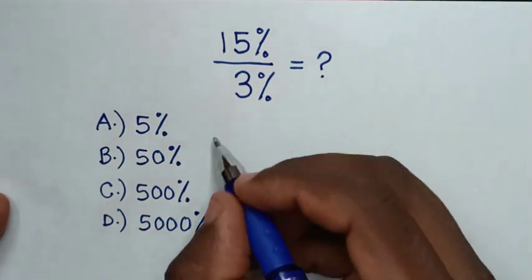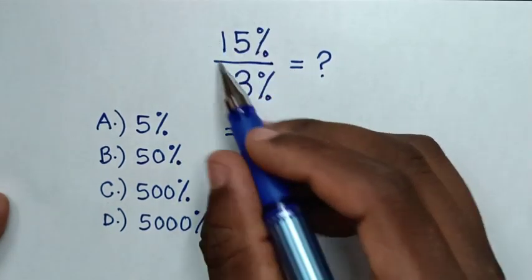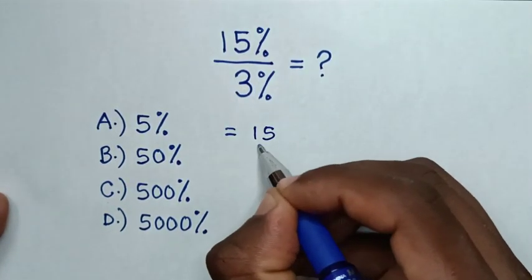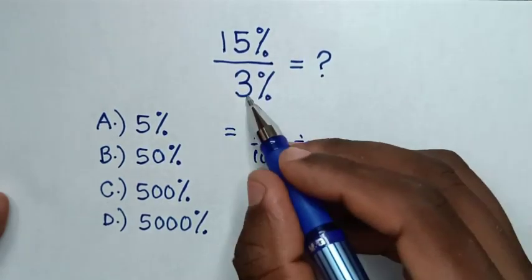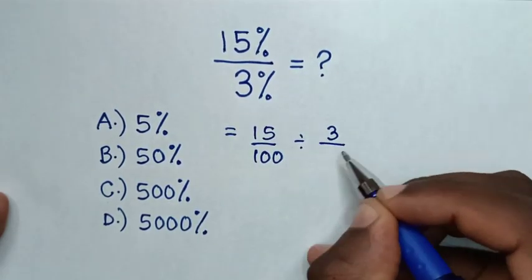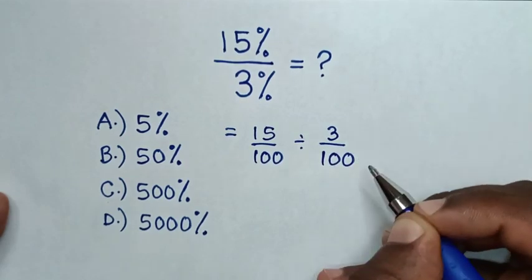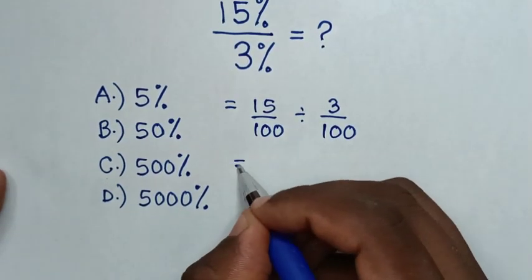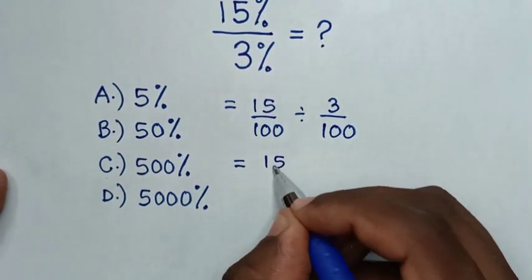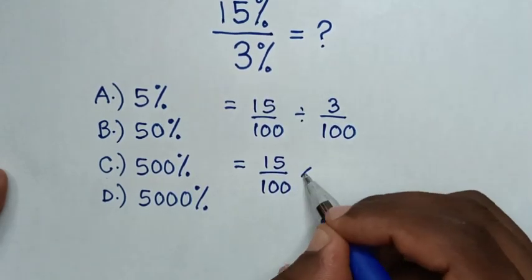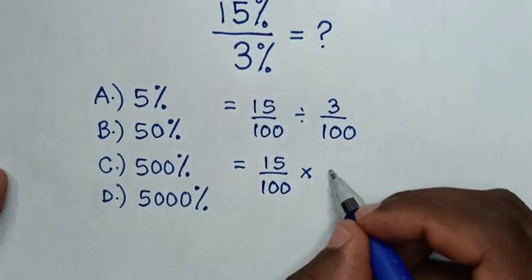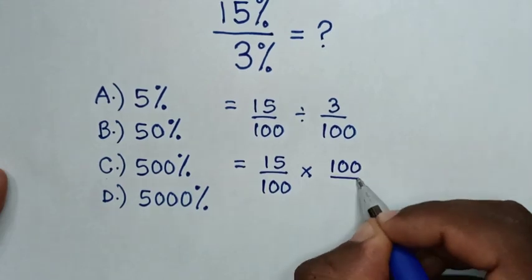So this will be equal to 15%, which is same as 15 over 100. Then divide by 3%, which is same as 3 over 100. Then this will be equal to 15 over 100, then times the reciprocal, so 100 over 3.